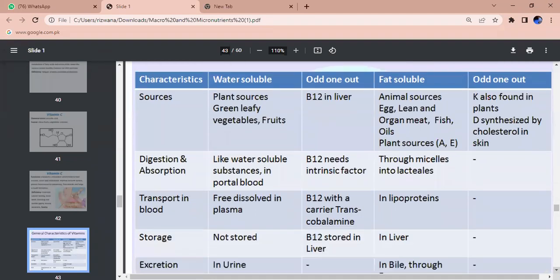Digestion and absorption - we have water soluble substances in portal blood. B12 needs intrinsic factor in the blood including clotting also.